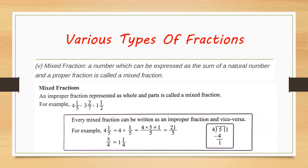Mixed fraction is a sum of a whole number and a proper fraction. Any improper fraction can be expressed using a mixed fraction. For example, 4 whole 1 by 5 is a mixed fraction, where 4 is the whole number part and 1 by 5 is the proper fraction. Similarly, 3 whole 2 by 7 has whole number 3 and proper fraction 2 by 7. Also, 1 whole 1 by 2 has whole number 1 and proper fraction 1 by 2.